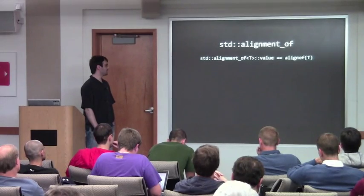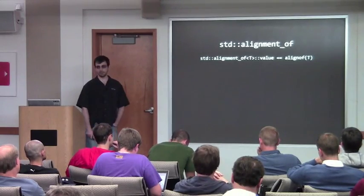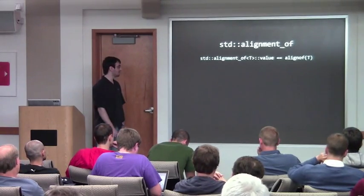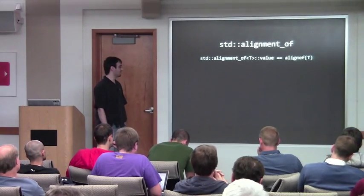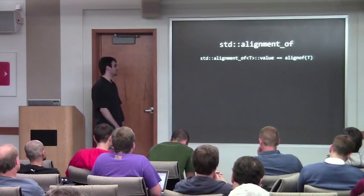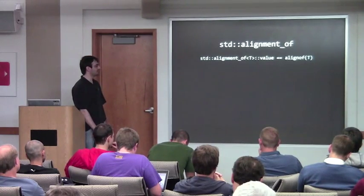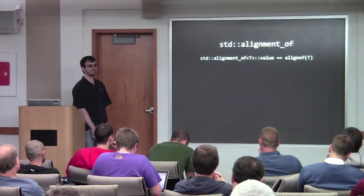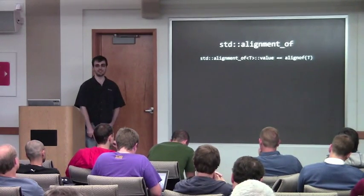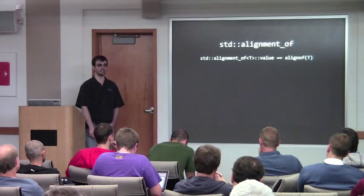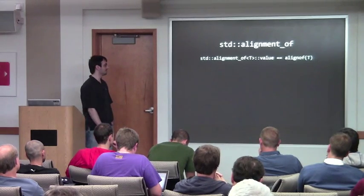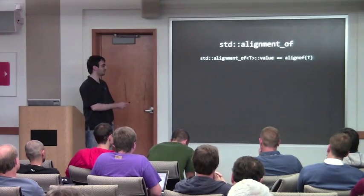Now into the library parts. `alignment_of` is a nice little template that has the value of `alignof`. It doesn't have any purpose except to be a longer form of `alignof`.